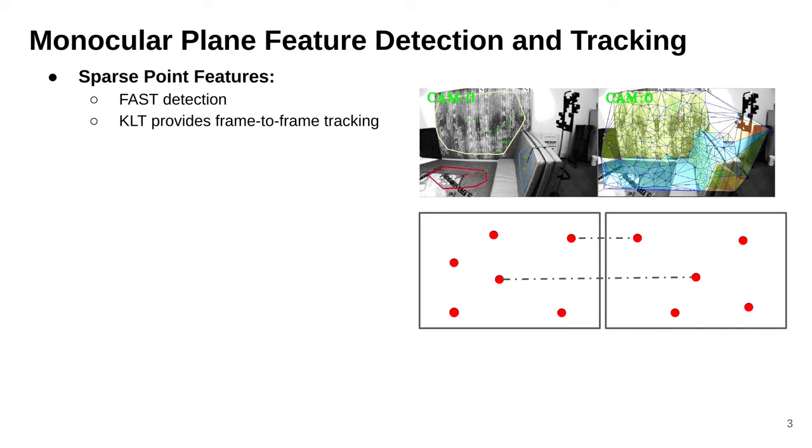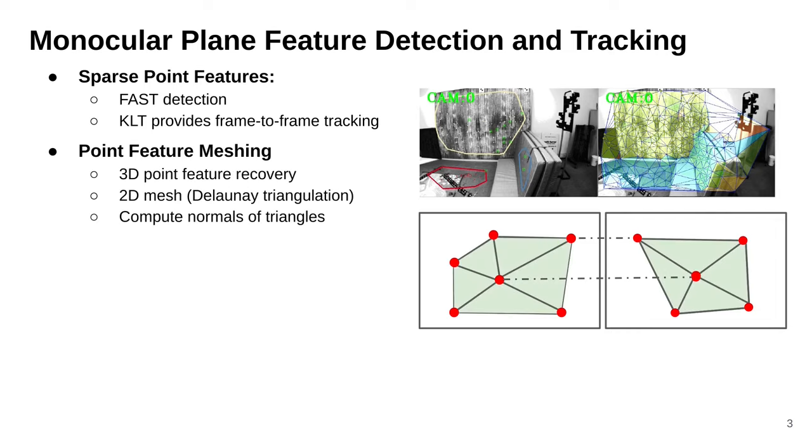In order to detect and track plane features, we first perform sparse point feature detection using FAST and KLT point feature tracking. This will also provide frame-to-frame plane tracking. To formulate a mesh, we incrementally recover point features to 3D and then formulate a 2D mesh using Delaunay triangulation and calculate the normal of each triangle.